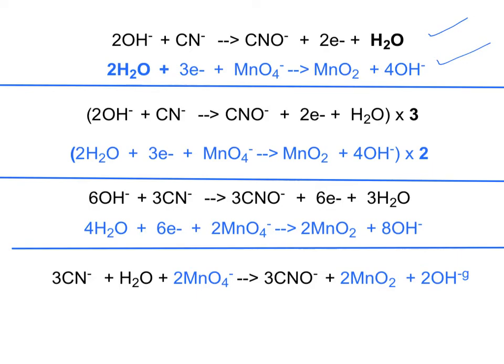So, we multiply the top one by three, the bottom one by two to get to the common factor of six. These threes and twos distribute to each quantity, and we end up with this half reaction and this half reaction. Six OH- plus three CN- going to three CNO- plus six electrons plus three H2O. My second half reaction, four H2O plus six electrons plus two MnO4- going to two MnO2 plus eight hydroxide ions.